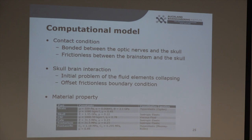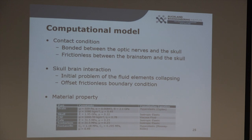The contact conditions were again very similar to the adult head model: frictionless boundary condition between the brainstem and the skull, and bonded between the outer edge of the optic nerves and the skull. The skull-brain interaction also had to be included, as there was definitely a lot more interaction between the brain and skull under these high acceleration motions. An offset frictionless boundary condition was used, and the material properties were all obtained from literature.